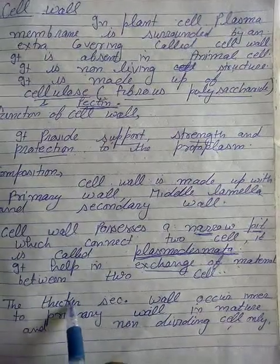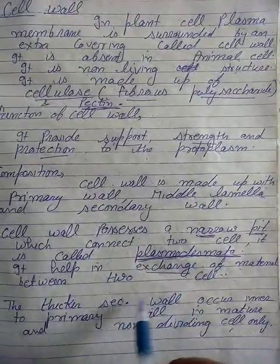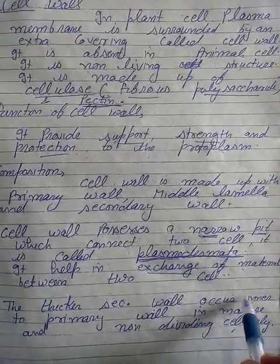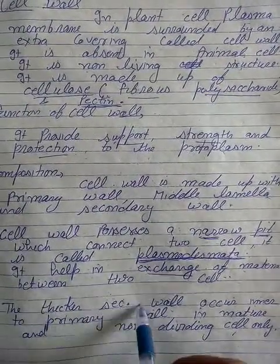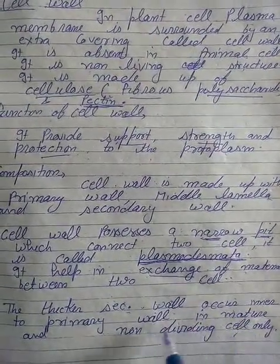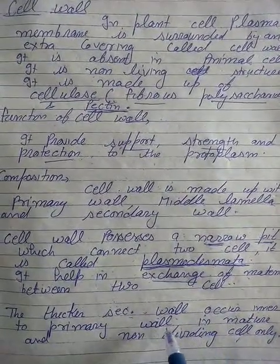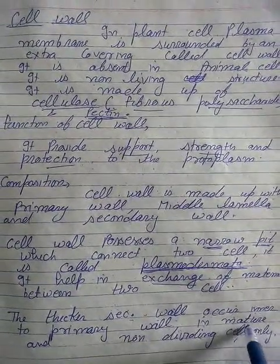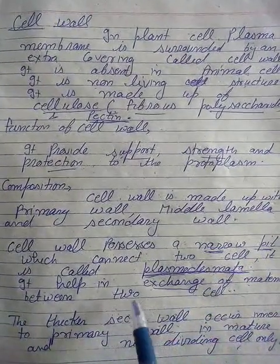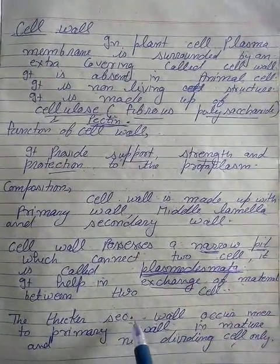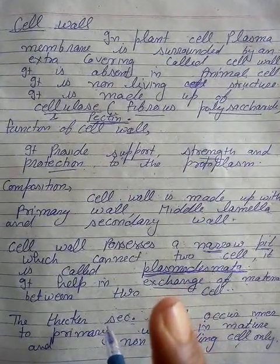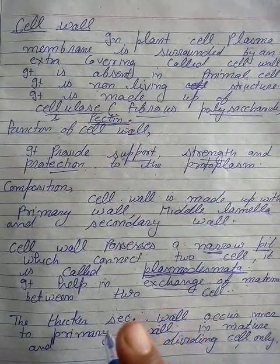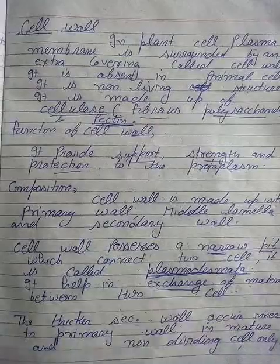Ab hum discuss karte hain — secondary wall jo hai woh thicker hogi, aur yeh primary wall ke andar hoti hai. This secondary wall is mature and it is found in non-dividing cells. So secondary wall non-dividing cells mein bani hoti hai. Cell wall ek extra covering hai jo cell ko protect karti hai, but cell wall sirf present hoti hai plant cell mein. Is it clear? Kal hum log next component ke baare mein discuss karenge.